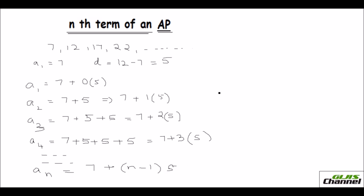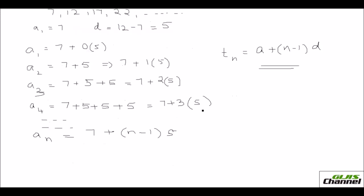So in general, the nth term — you can use 'an' or 'tn' — is the first term plus n minus 1 times the common difference. This is our formula for the nth term. Let's see how we use this in problems.